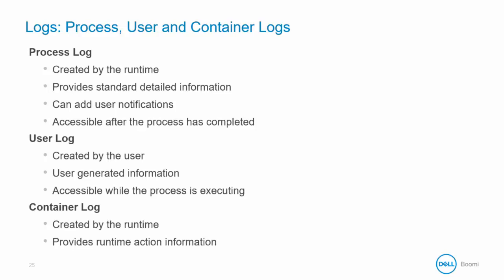The user log, in contrast, is created by the user, and the user themselves decide what information should be logged in the user log. This is accessible while the process is executing, and this can be helpful if you have a process that is working through a lot of data and is taking a while to complete. You can add notifications to your process so that you can track progress by viewing this log.